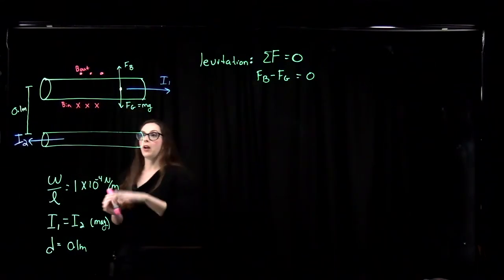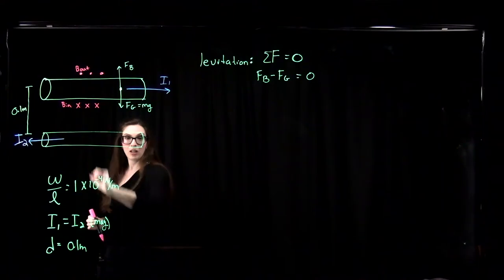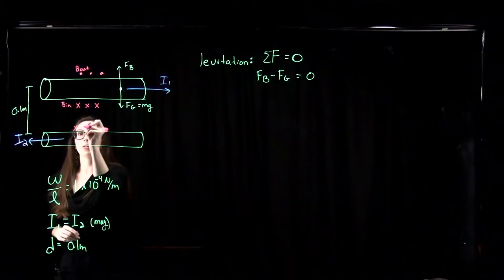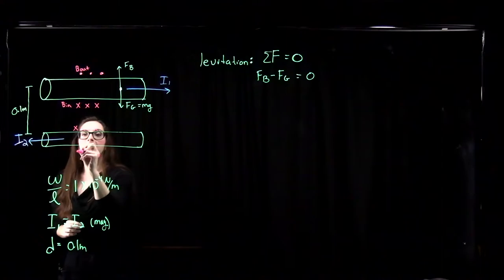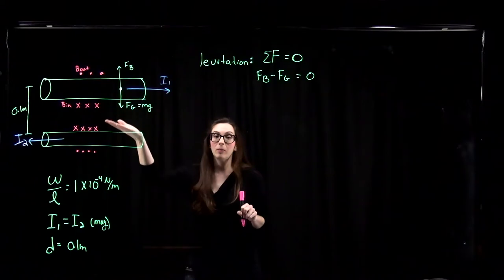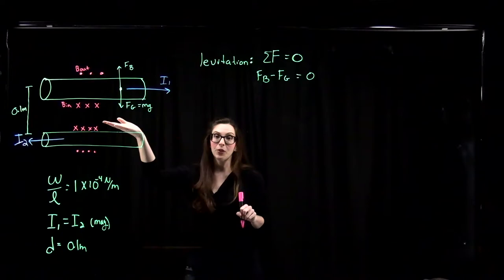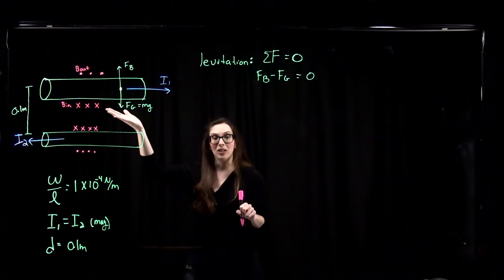For the second wire with current in the opposite direction, the magnetic field is into the page on top and out of the page on the bottom. Between the two wires, we have the same sign of magnetic field direction — which means the wires want to repel each other, and that's how we get the levitation.